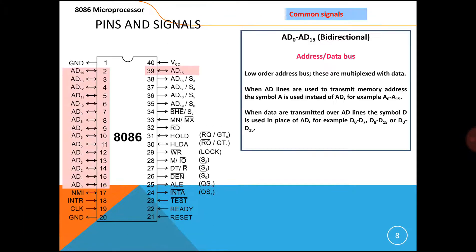First, let's discuss AD0 to AD15 — these are address and data multiplexed lines. Multiplexed address and data are transmitted through these lines. Internally, latches are used to de-multiplex the address and data under the supervision of ALE (Address Latch Enable). ALE controls the latches to separate address and data.